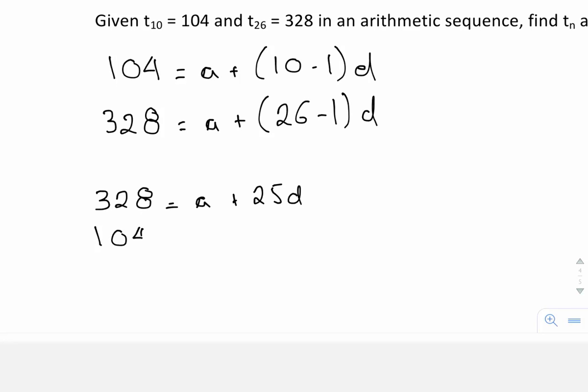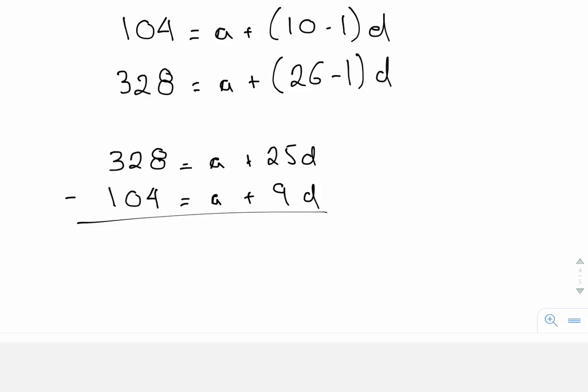And 104 equals A plus 9D. If I subtract these two, I obtain 224 equals 25 minus 9 is 16D.